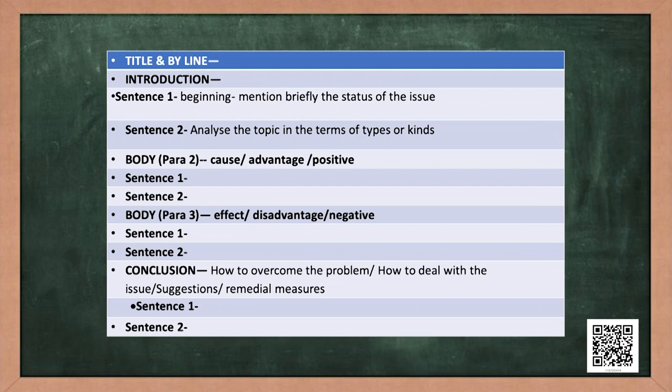Now I feel you are confident in dealing with the first stage — planning. Let us move on to the second stage: organizing. Once you have jotted down the points, you need to organize them using an organizer. Every paragraph will have about four or five points. In the first paragraph you have your introduction. Then paragraphs two and three are like two sides of the same coin — if you write advantages in para 2, you write disadvantages in para 3. And finally, in the conclusion you give suggestions and conclude on a positive note.